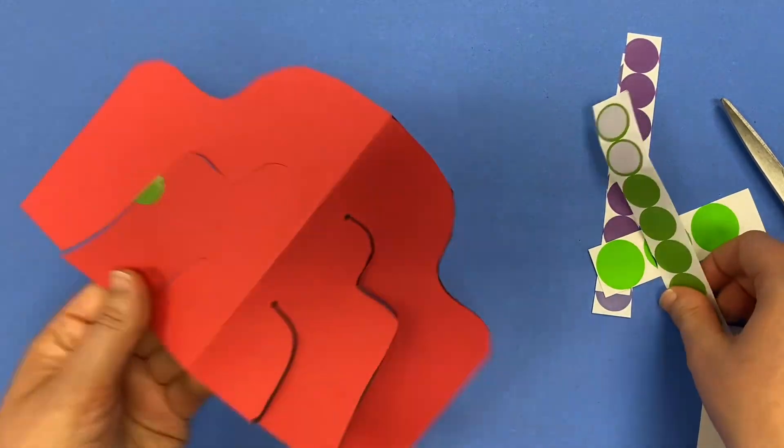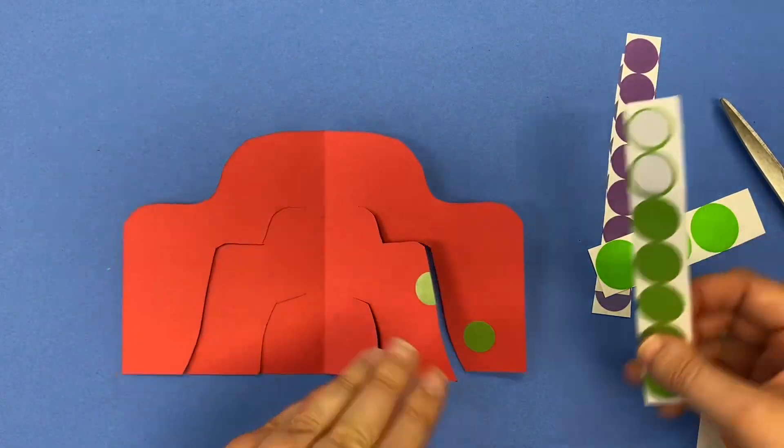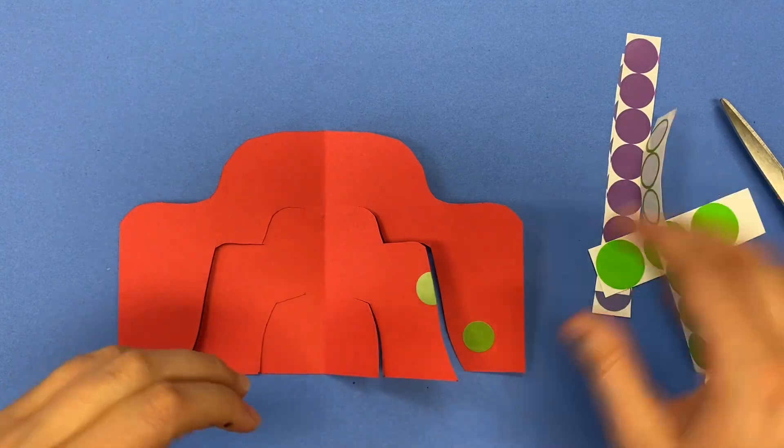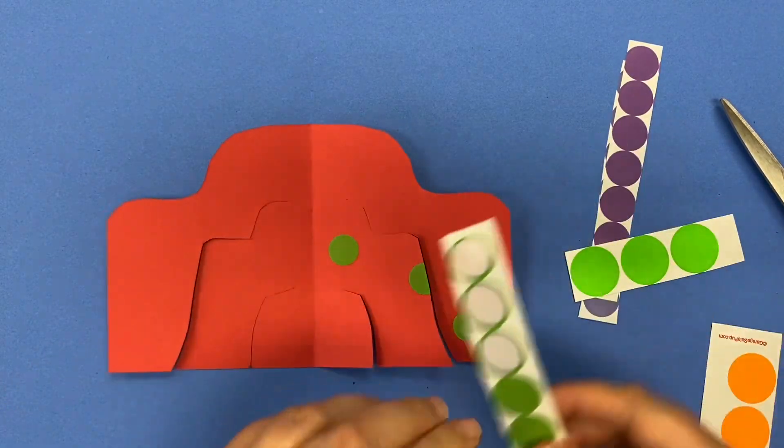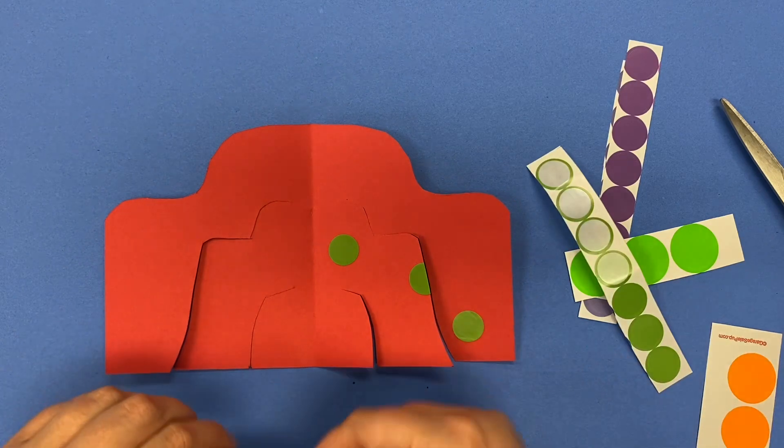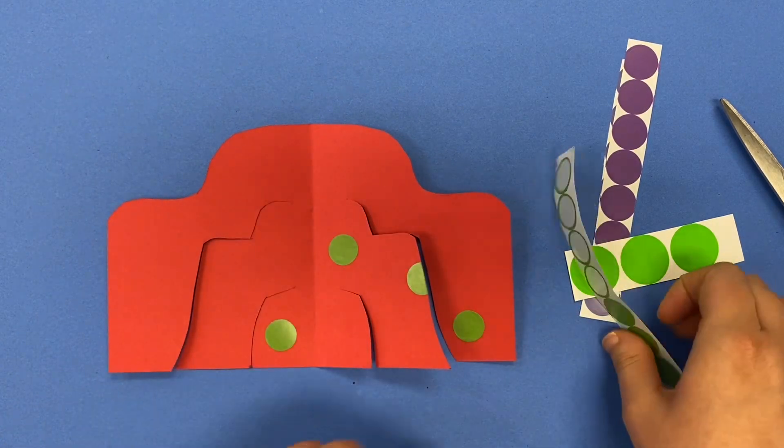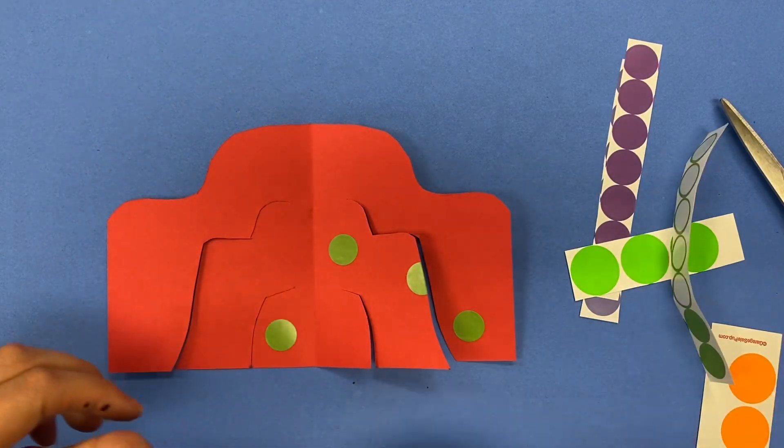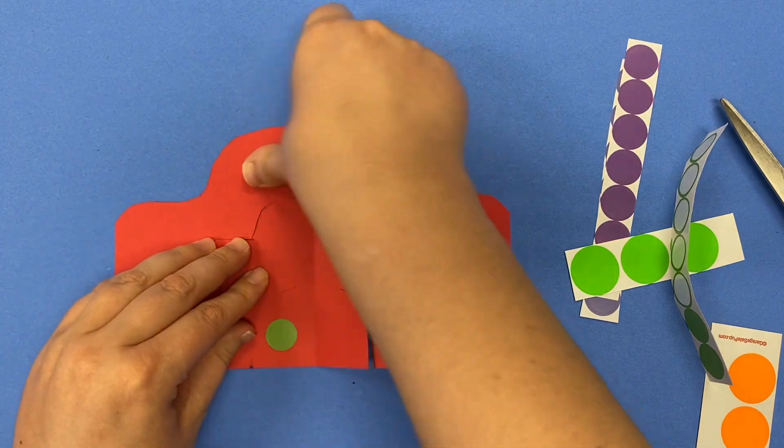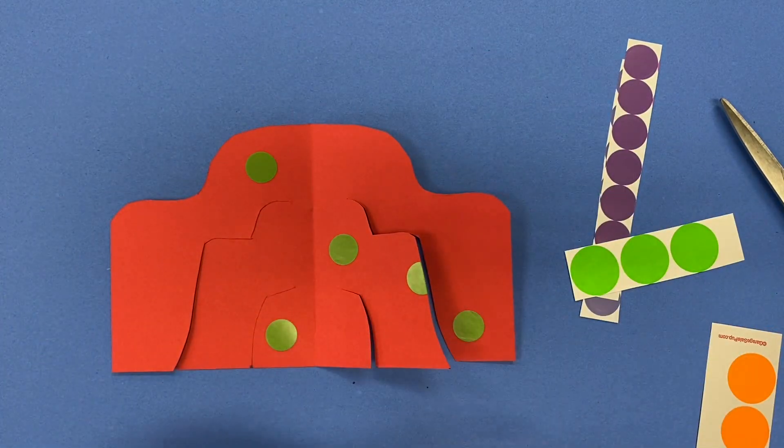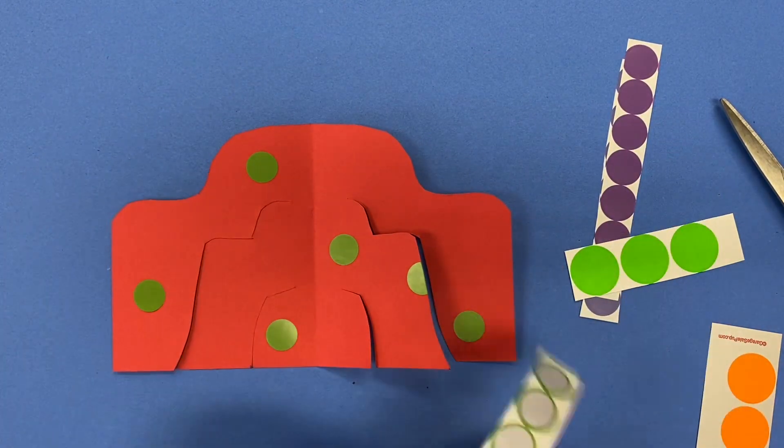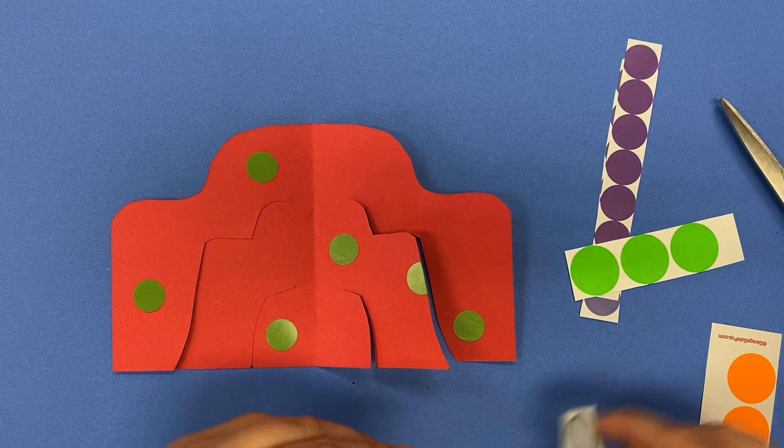But if you open it up and put that dot on the line and then fold it to the other side, because we're going to decorate both sides of our Stabile because it is going to be a three dimensional sculpture, which means that it's going to be interesting to look at from all the way around. So we don't want to only decorate one side. We want to decorate both sides.